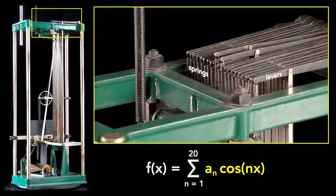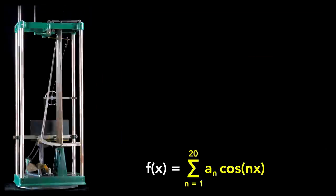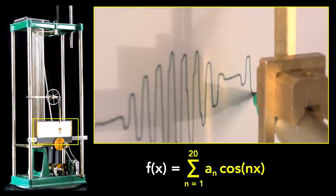Fourth, at the top, springs and levers that add together these weighted sinusoids. And lastly, on the front side, a mechanism for recording this sum on a piece of paper.